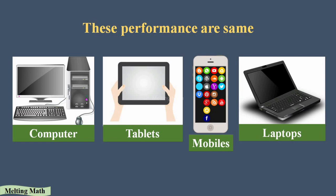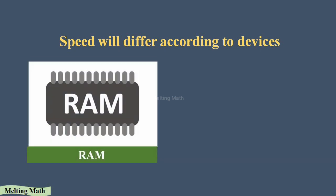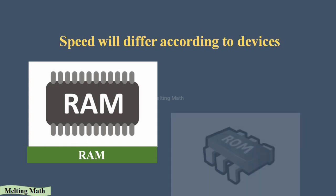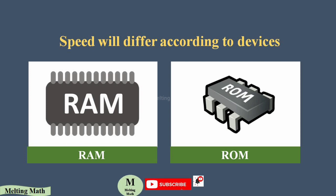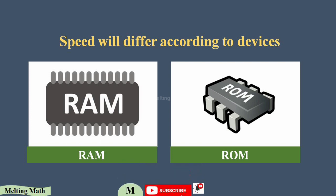Their speed will differ according to the device. Speed differs according to the RAM and ROM. RAM is the internal storage of any device, and ROM is the app working space of any device. If you have more space in RAM and ROM, it helps your device to run faster.